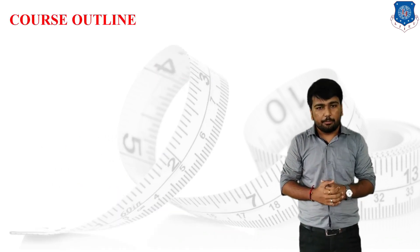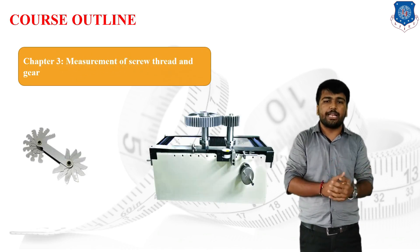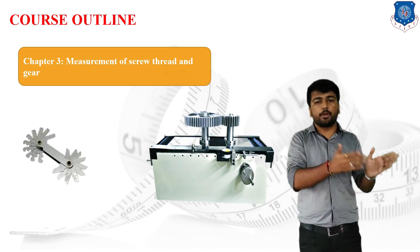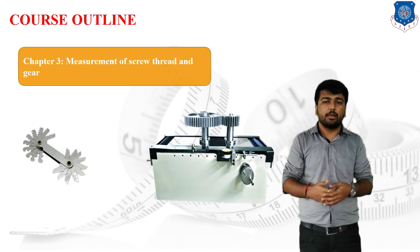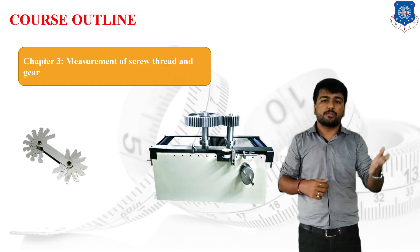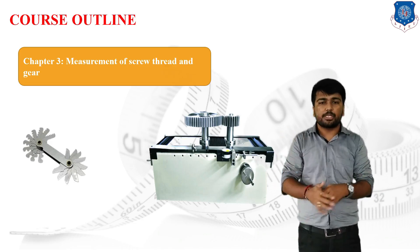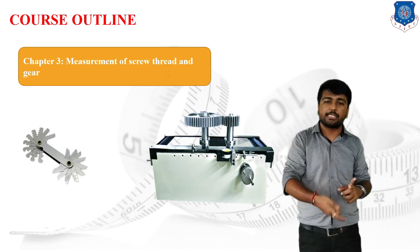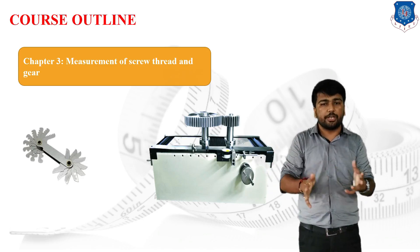Unit 3 is Measurement of Screw Thread and Gears. Gears and screw threads are widely used in mechanical industries and require specific measuring techniques such as the Parkinson gear tester. Since screws are produced in mass production — potentially tons per day — it is not physically possible to check each screw individually. So a random sampling process is used, measuring the thread profiles by means of different instruments.